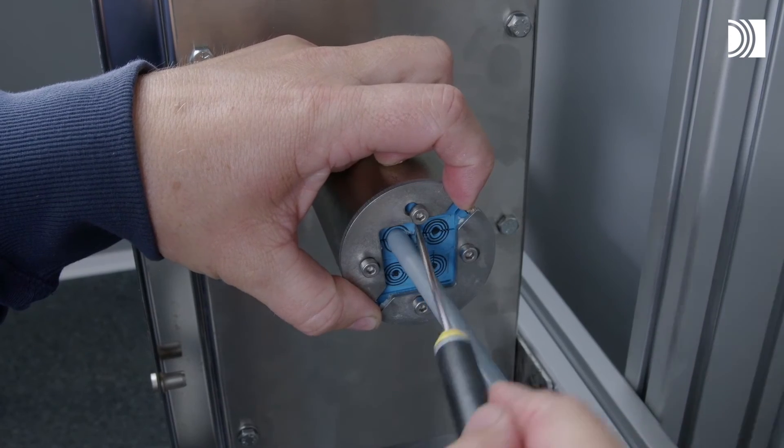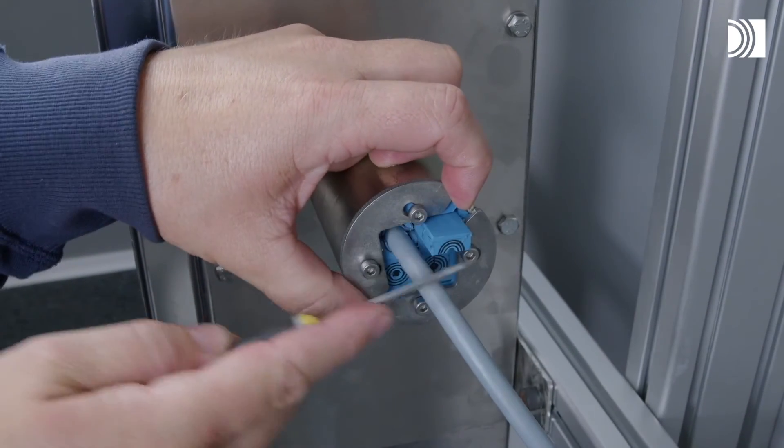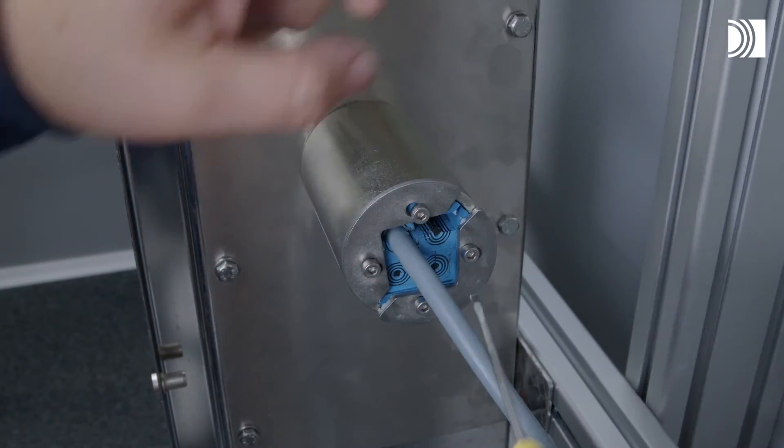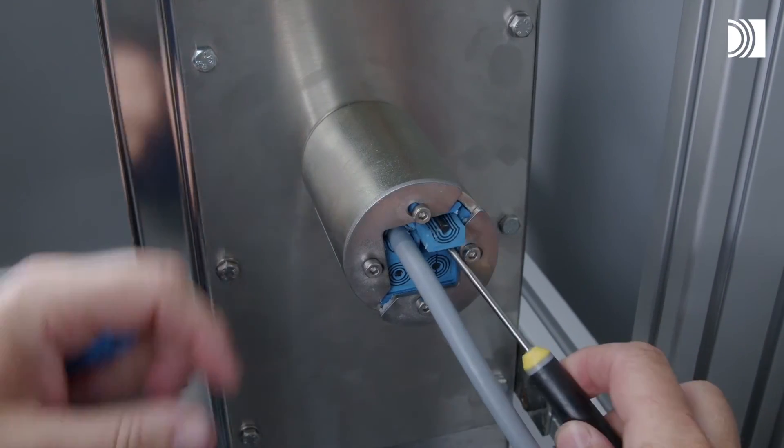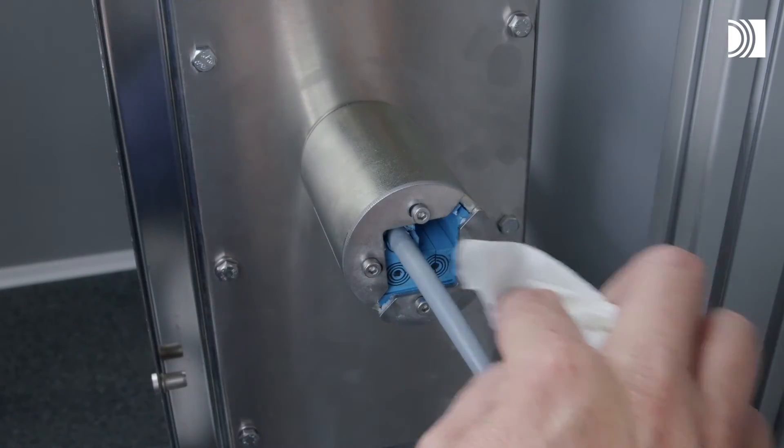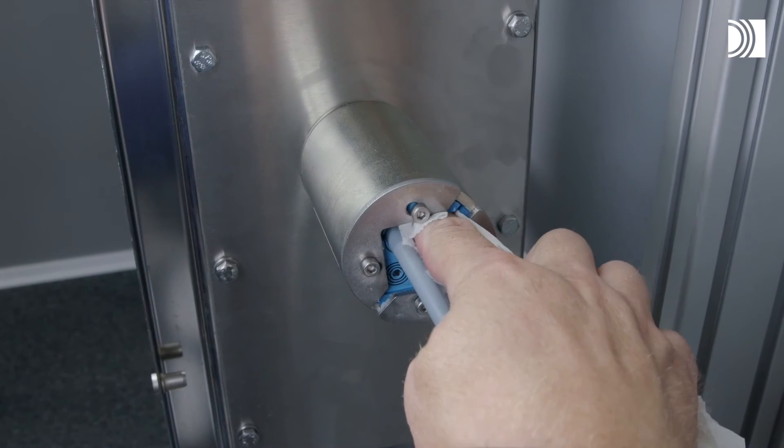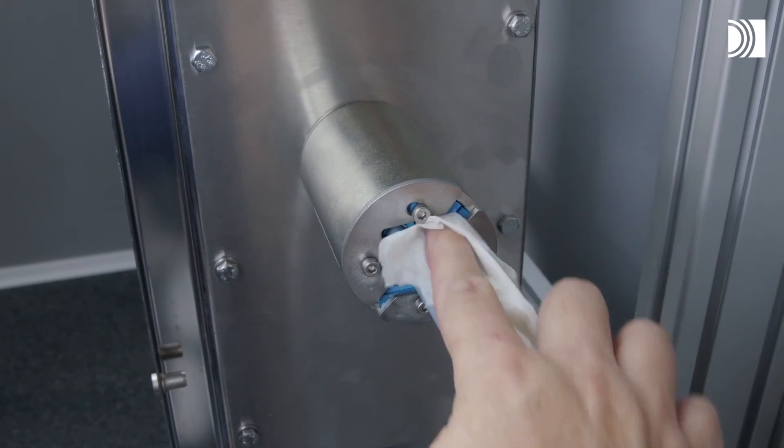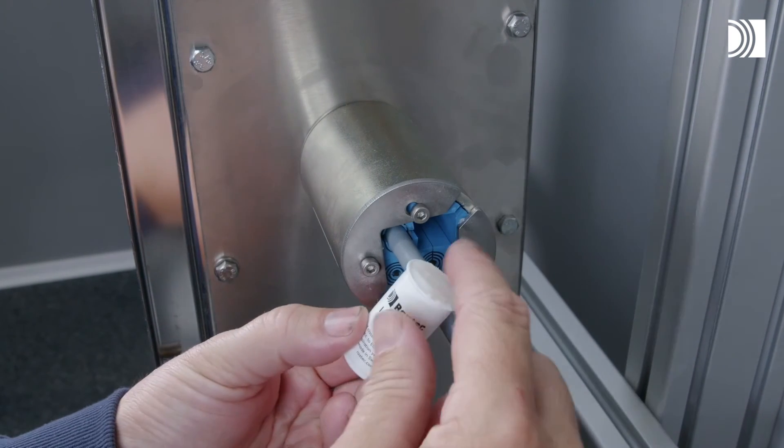Remove the modules by using a flat tool. Replace any damaged modules. Clean the inside surfaces of the exposed packing space.